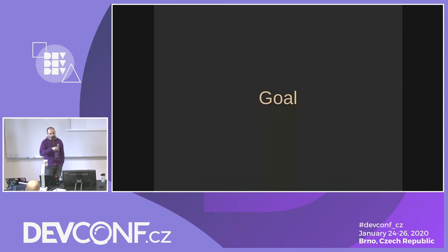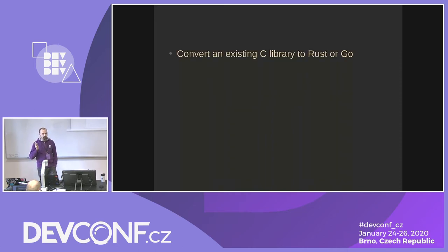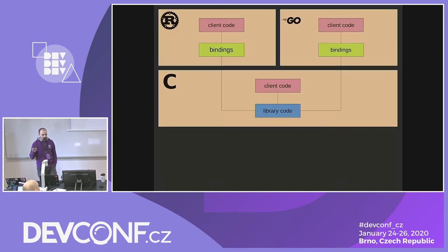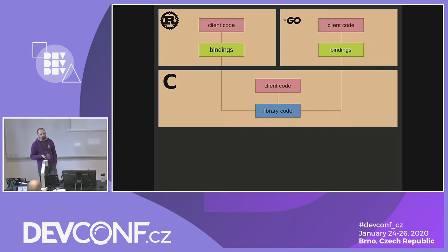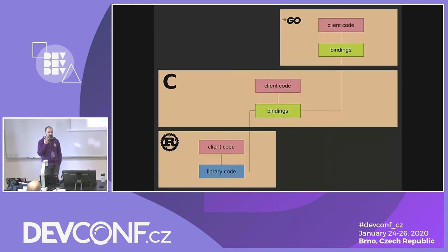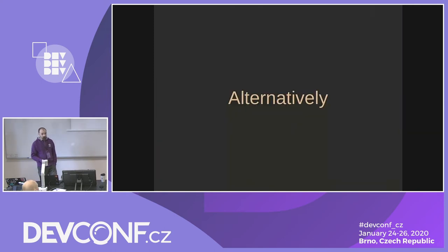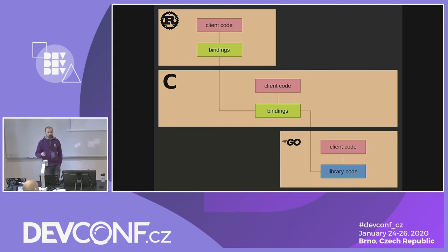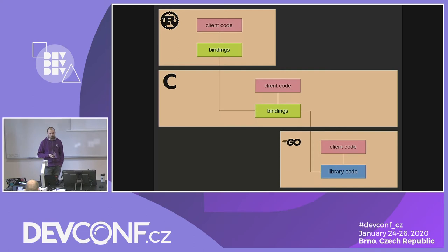The goal we have in mind for this experiment is to take some existing C library and rewrite the logic in Rust or Go. Currently we have library code with all logic in C, client code using it directly, and bindings for Rust and Go. What we want instead is the library implemented in Rust with C and Go bindings — or alternatively the core library written in Go with C and Rust bindings. The complexity doesn't really increase because we have the same number of bindings, but ideally we move most of the complex logic away from C.